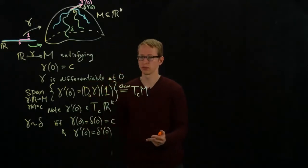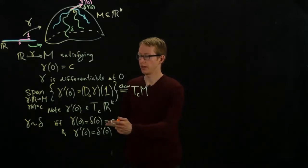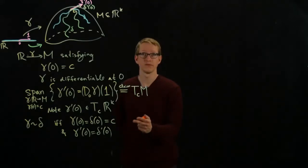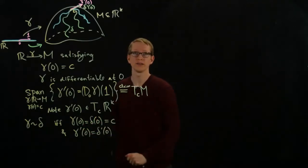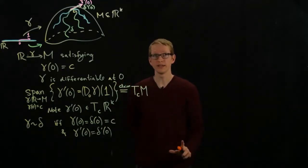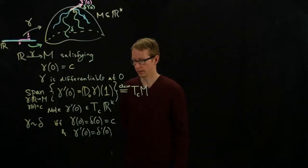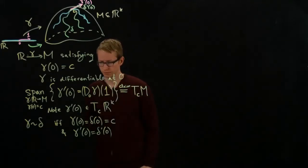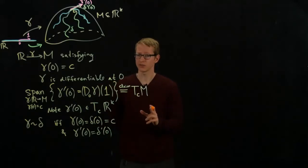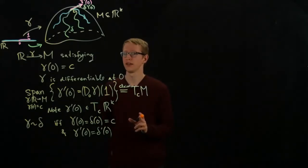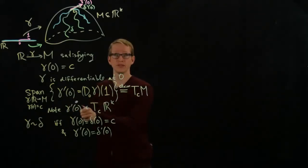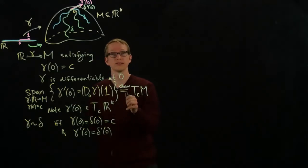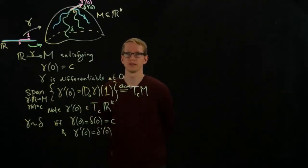So under this equivalence relation, it actually turns out that the set of such vectors after you mod out this equivalence relation is finite dimensional. That's kind of a surprise already. And it also equals this. It's actually not difficult to see that the span of these vectors is a subset of the tangent space at M.